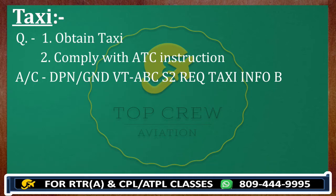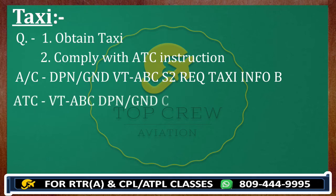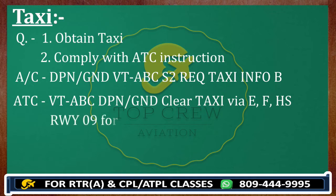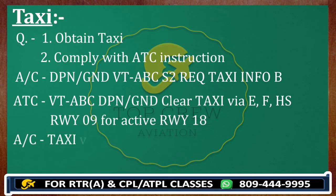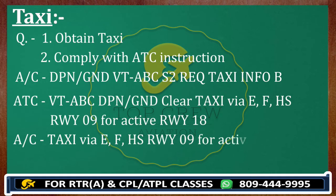The ATC response would be: Victor Tango Alpha Bravo Charlie, Delhi Ground, cleared to taxi via Echo Fox Road, hold short Runway 09er, active Runway 18. And we have to read this back: taxi via Echo Fox Road, hold short Runway 09er, active Runway 18, Victor Tango Alpha Bravo Charlie. We have to read back whatever instructions we are getting from ATC, and then we have to follow them in pieces.